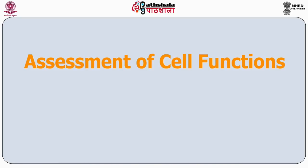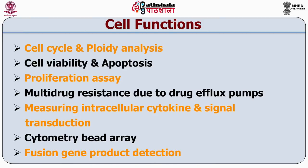We will now discuss the next set of applications of flow cytometry highlighting assessment of cellular function. These include analysis of cell cycle and ploidy, cell viability and apoptosis, proliferation assays, multi-drug resistance due to drug efflux pumps, intracellular cytokine levels and signal transduction, cytometry bead array for simultaneous detection of multiple cytokines, and fusion gene product detection.